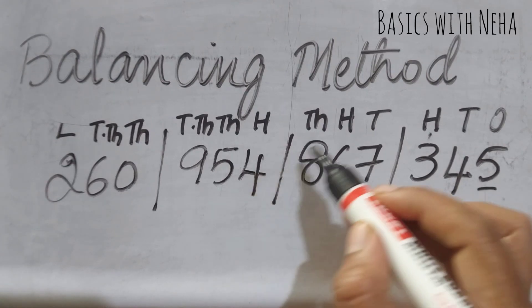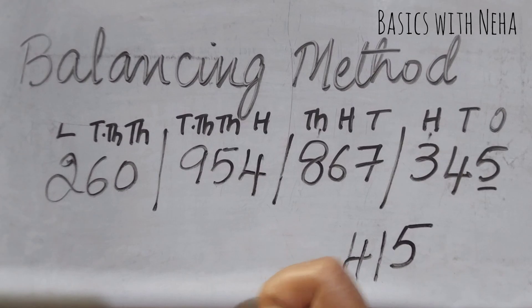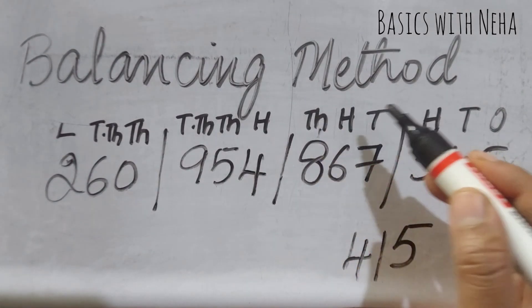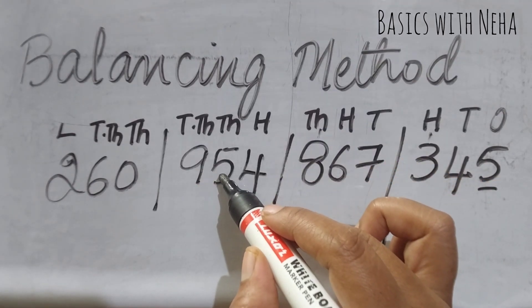Now I have to do the thousands place. I'm done with the hundreds. I'm going to do the thousands: eight plus one is nine, nine plus five is fourteen, fourteen plus zero is fourteen.